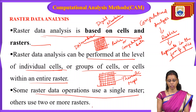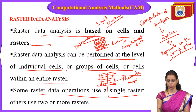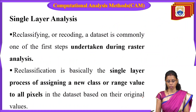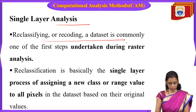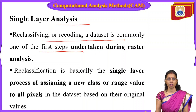Some raster data operations use a single raster, while some use two rasters — Map 1 and Map 2. In single layer analysis, reclassifying or recoding a data set is commonly one of the first steps undertaken during raster analysis.